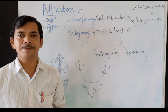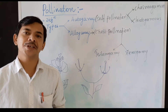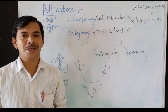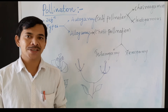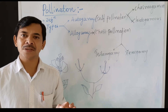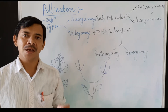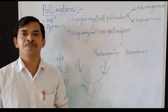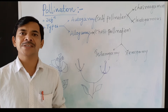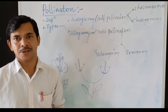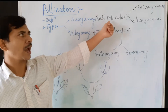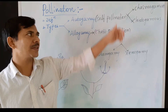There are basically two types of pollination. One is autogamy — 'auto' means self, so autogamy means self-pollination. The second one is allogamy, which is nothing but cross-pollination. In self-pollination or autogamy, there are two types of flowers.